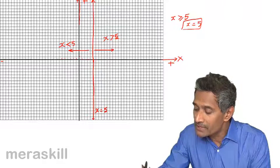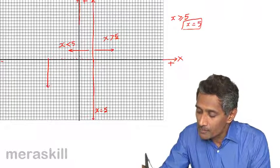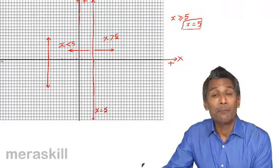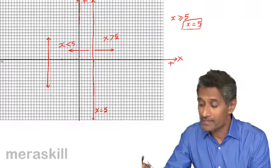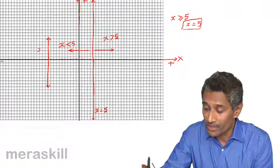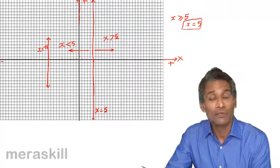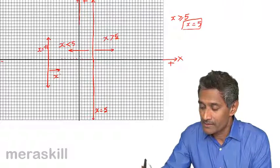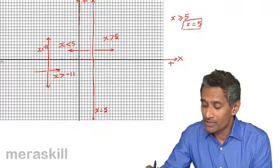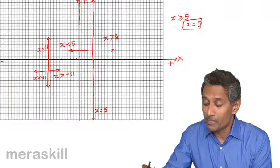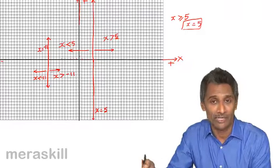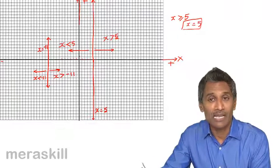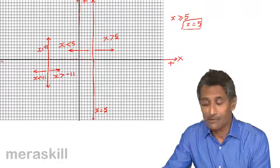Similarly, if you take a line parallel to the y-axis at x equals minus 11, every point on it has x-coordinate as minus 11. The region to the right of it is x greater than minus 11, and the region to the left is x less than minus 11. If you include the line, the entire region with the line is x greater than or equal to minus 11, or x less than or equal to minus 11.